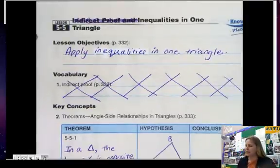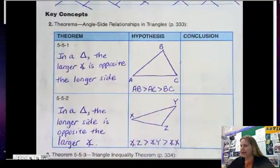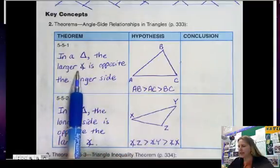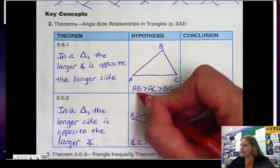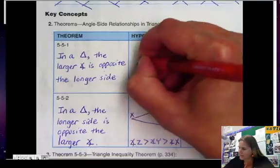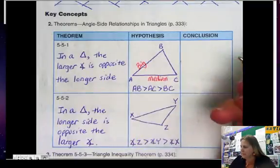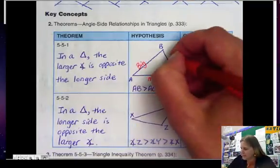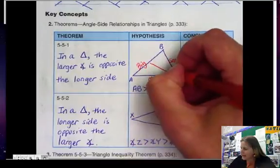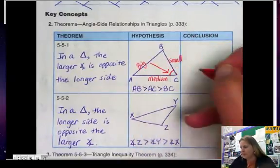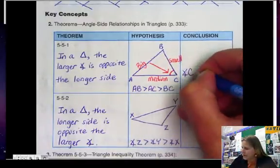So here we have some theorems. In a triangle, the larger angle is opposite the longer side. So if I have this triangle and I'm told that AB is the biggest, AC is the medium sized, and BC is the smallest, then the opposite of the big side is going to be the big angle. So C is going to be the big angle — angle C is the biggest.